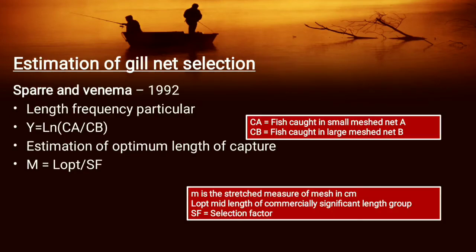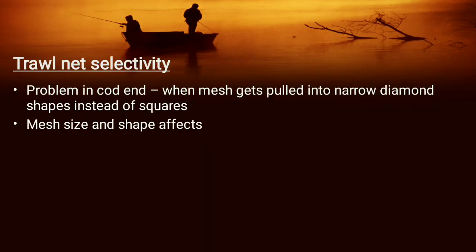These are all about gill net selectivity. To estimate the gill net selection, Sparre and Venema in 1992 gave a method to estimate gill net selection, which depends mainly on the length frequency. The equation is: Y equals ln(CA divided by CB), where CA is fish caught in small mesh net A and CB is fish caught in large mesh net B. The estimation of optimum length of capture is: M equals L-opt divided by SF, where SF is the selection factor, L-opt is the mid-length of the commercially significant length group, and M is the stretched measure of mesh in cm.